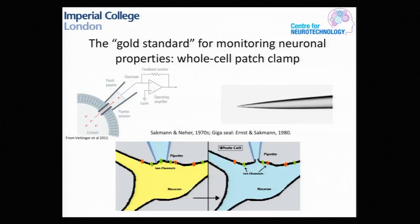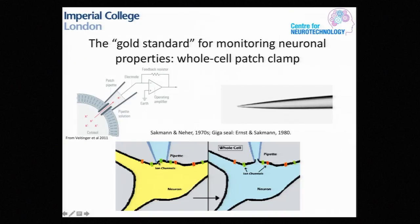The gold standard for monitoring neuronal properties, of course, is the whole cell patch clamp, developed some time ago and used to great acclaim to study properties of individual ion channels, et cetera. Basically, you take a pipette down and stick it onto the side of a cell. You can do whole cell recording, or cell-attached recording where you can monitor action potentials without disrupting the cell. Or you can break into the cell and go whole cell — in principle disrupting the cell, but with full access to the inside. You can monitor sub-threshold signals and even put plasmids in to modify what's going on.